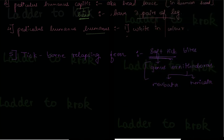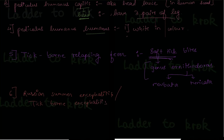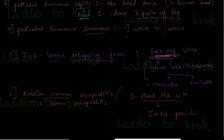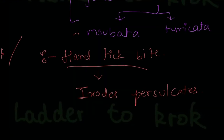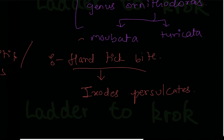The next disease to remember is Russian summer encephalitis, also called tick-borne encephalitis. It affects the brain — 'encephalus' means brain. It is caused by a hard tick bite. So to summarize: tick-borne relapsing fever is caused by a soft tick bite, while Russian summer encephalitis is caused by a hard tick bite. Please write down and remember the name of the hard tick.